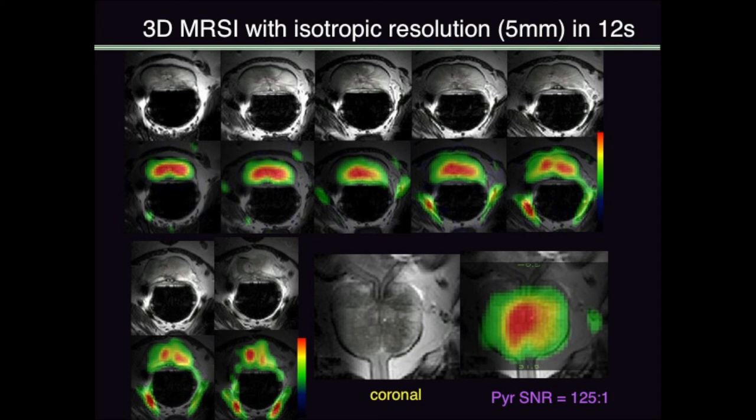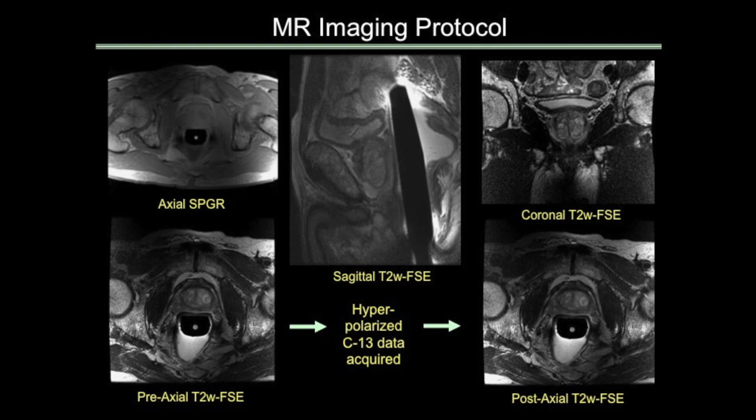Here was some of the first data — a map of pyruvate and a map of lactate formed after injecting into the normal dog prostate. We were able to see signal-to-noise ratios in the hundreds — very high signal-to-noise of both compounds. Here's a three-dimensional localization: axial slices through the prostate with an overlay of the metabolism on top of those slices. Here's an example in a person — our first problem was that the first version of this carbon-13 transmit coil actually decreased the quality of our proton coil and had to be redesigned to get rid of the shading. These are the anatomic images required: axial, sagittal, T2-weighted, and coronal views.